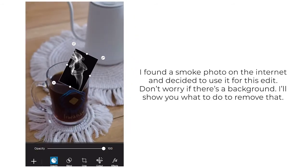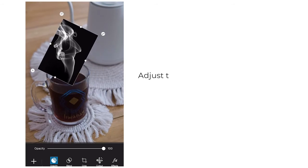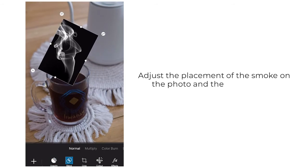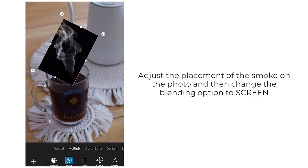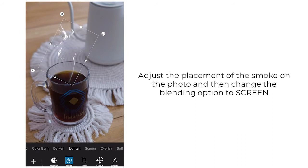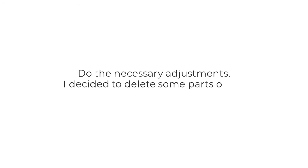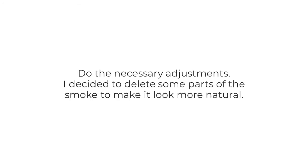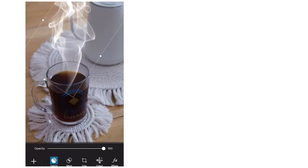Adjust the placement of the smoke on the photo and then change the blending option to Screen. Don't forget to do the necessary adjustments. I decided to delete some parts of the smoke to make it look more natural.